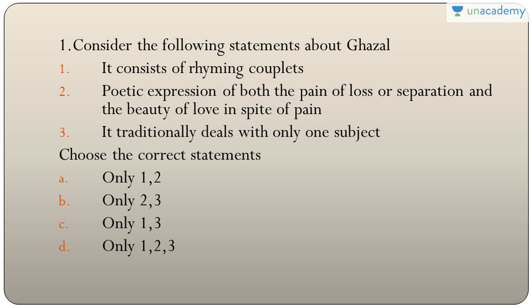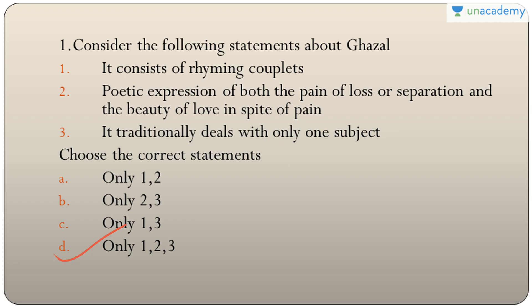Question one: statements about Ghazal — it consists of rhyming couplets, is a poetic expression of both pain of loss or separation and the beauty of love, and traditionally deals with only one subject. All three are true, so the answer is D — only one, two, and three. It spread to South Asia in the 12th century AD due to the influence of Sufism.